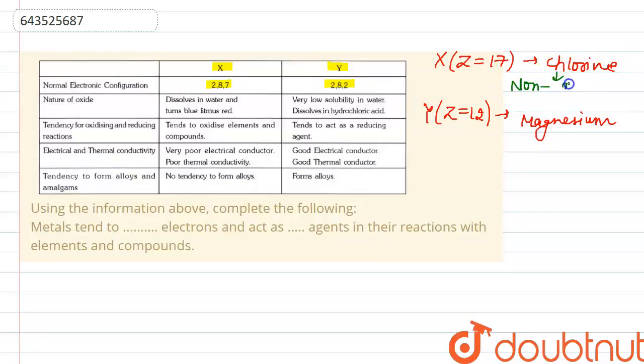And magnesium is a metal. Therefore, in the given table we are mentioning the properties of non-metal and metals.